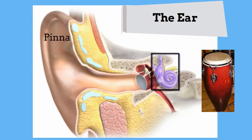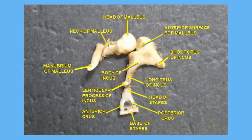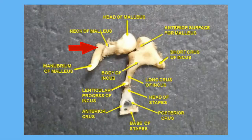The vibrations from the eardrum pass to the middle ear which contains three small bones: the malleus, which is called the hammer; the incus, which is sometimes called the anvil; and the stirrup, which is called the stapes.